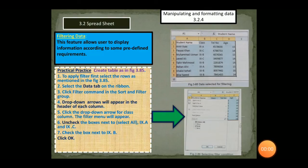Next topic is topic 3.2.4 of textbook page 107, manipulating and formatting data. First function in manipulating and formatting data is data filtering or filtering data. What is this function? Why do we need it?